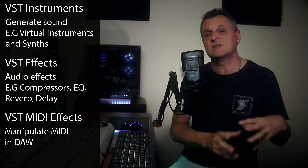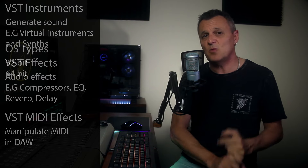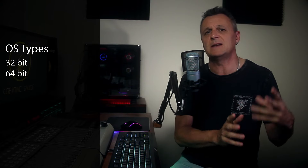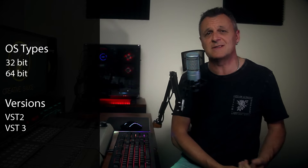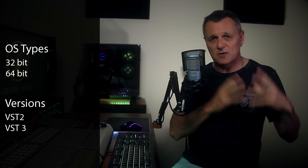VST MIDI effects are used to manipulate the MIDI within our DAW. As well as this, they'll come in 32-bit and 64-bit versions and you'll need to choose depending on your operating system. There are also different versions — most commonly we see VST 2s and VST 3s — and this can also affect where our VSTs get installed on the system. So with all of that knowledge in our head let's go ahead and install a VST plugin.